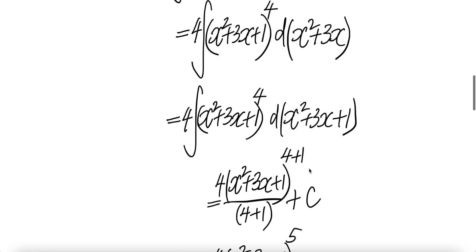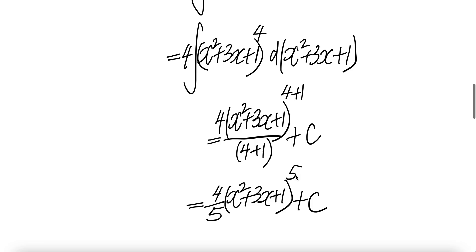Now we know how to get the integral of this is 4 plus 1 over 4 plus 1, which is 5 up, 5 down. So it will be 4 over 5 x squared plus 3x plus 1 to the power of 5.